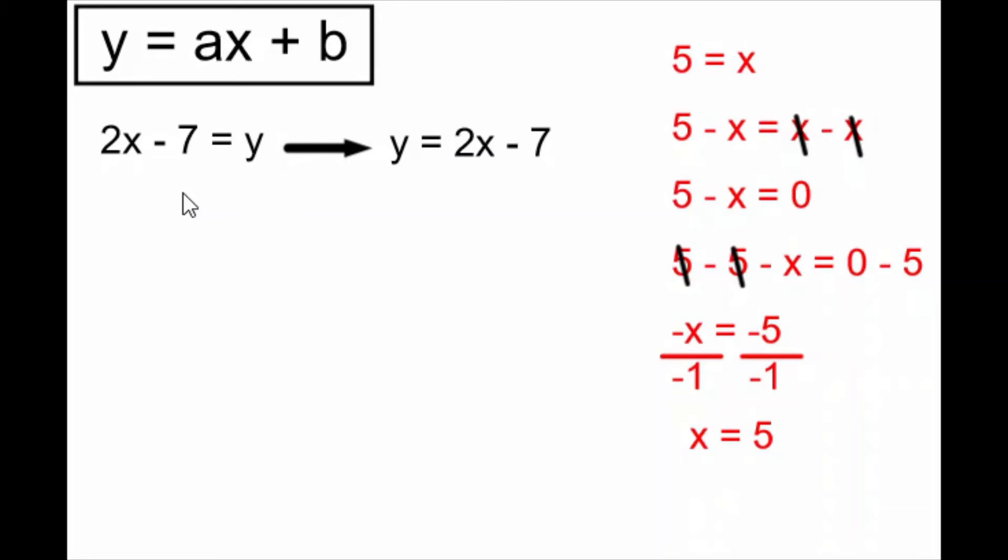But I can also do this showing all of the steps of the algebra. If I wish, I could subtract a y from both sides. These y's cancel and I have 2x minus 7 minus y equals 0. Well, now the y is on the left side of the equals, but I want to get rid of the 2x and the minus 7. I can subtract a 2x from both sides and I can add a 7 to both sides.